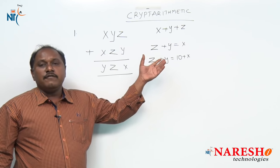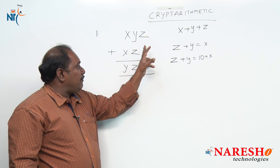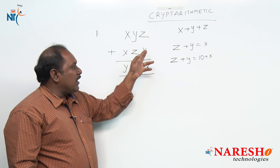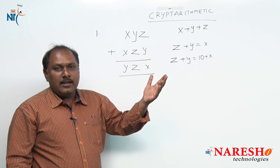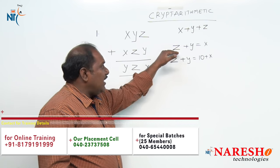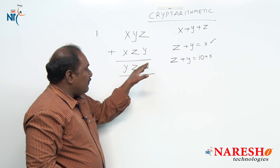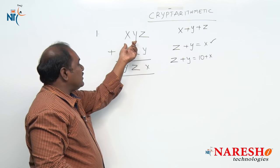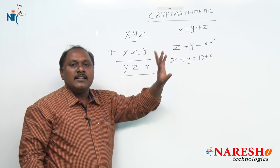Now, which one is correct, we do not know, because all here are variables. z plus y can be x, like 2 plus 3 is 5. Or z plus y can be 10 plus x, like 8 plus 7 is 15 — we don't write 15, we write only 5 and take 1 as a carry. Let us assume the first case is correct — that z plus y equals x with no carry from the units place to the tens place. Now let us add the tens place assuming z plus y equals x with no carry.